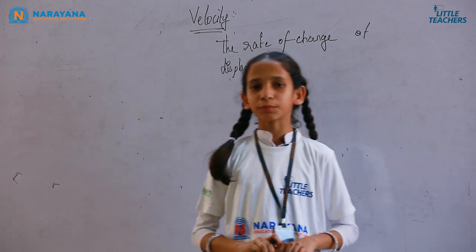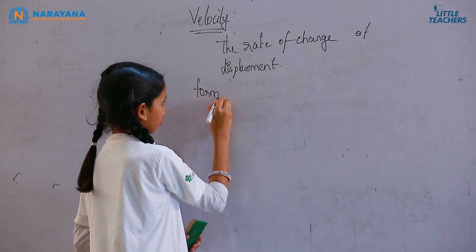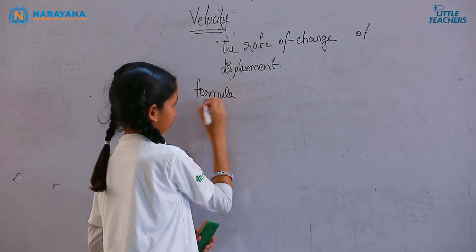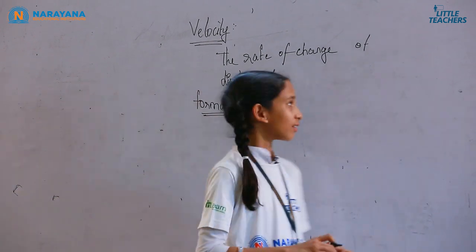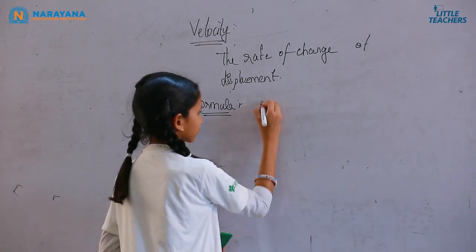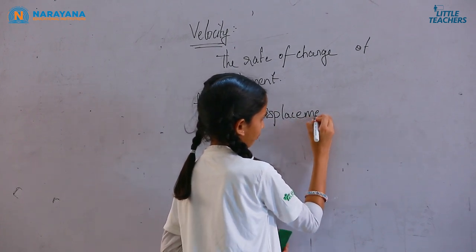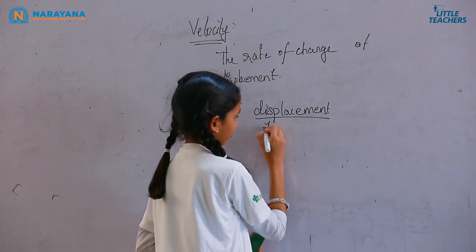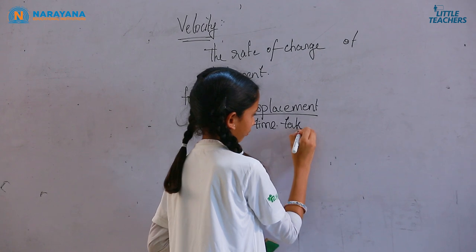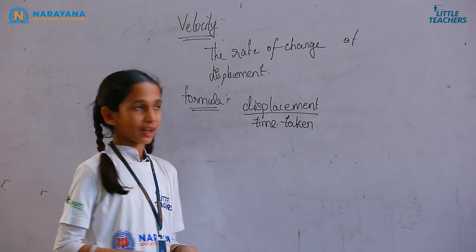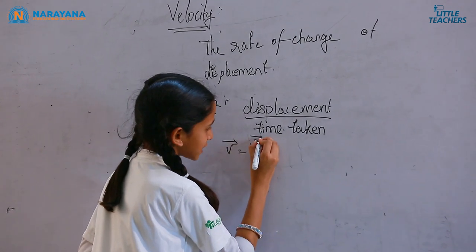Now let's move to the formula of velocity. Velocity is equal to total displacement divided by time taken. The mathematical expression of velocity is: V̄ = S̄ / T.